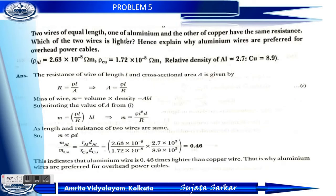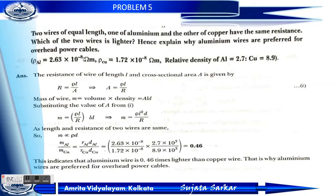Problem 5: Two wires of equal length, one of aluminium and the other of copper, have the same resistance. Explain why aluminium wires are preferred for overhead power cables. Given: resistivity of aluminium rho_Al equals 2.63 into 10 to the power minus 8 ohm meter.